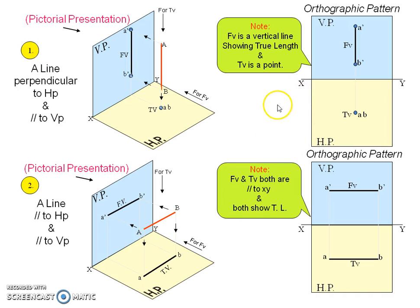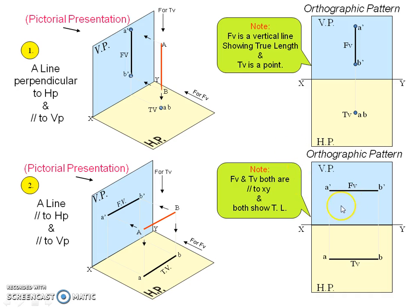From this we can draw a conclusion: when a line is parallel to any plane, we get the true length on that plane. Also note that when the line is perpendicular to HP, the top view will be a point. In this case, since the line is parallel to both HP and VP, we get a true-length line in each plane.